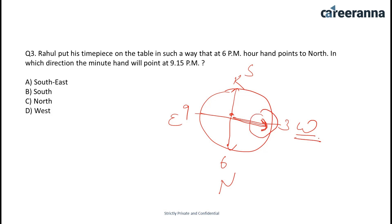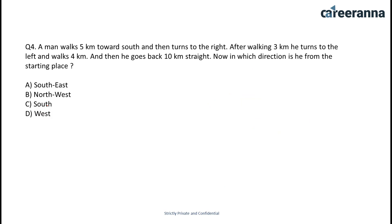The next question: a man walks five kilometers towards south, then turns to the right, walks three kilometers, then turns to the left and walks four kilometers. The man walks five kilometers south, turns right and walks three kilometers in that direction, then turns left again and walks four kilometers.